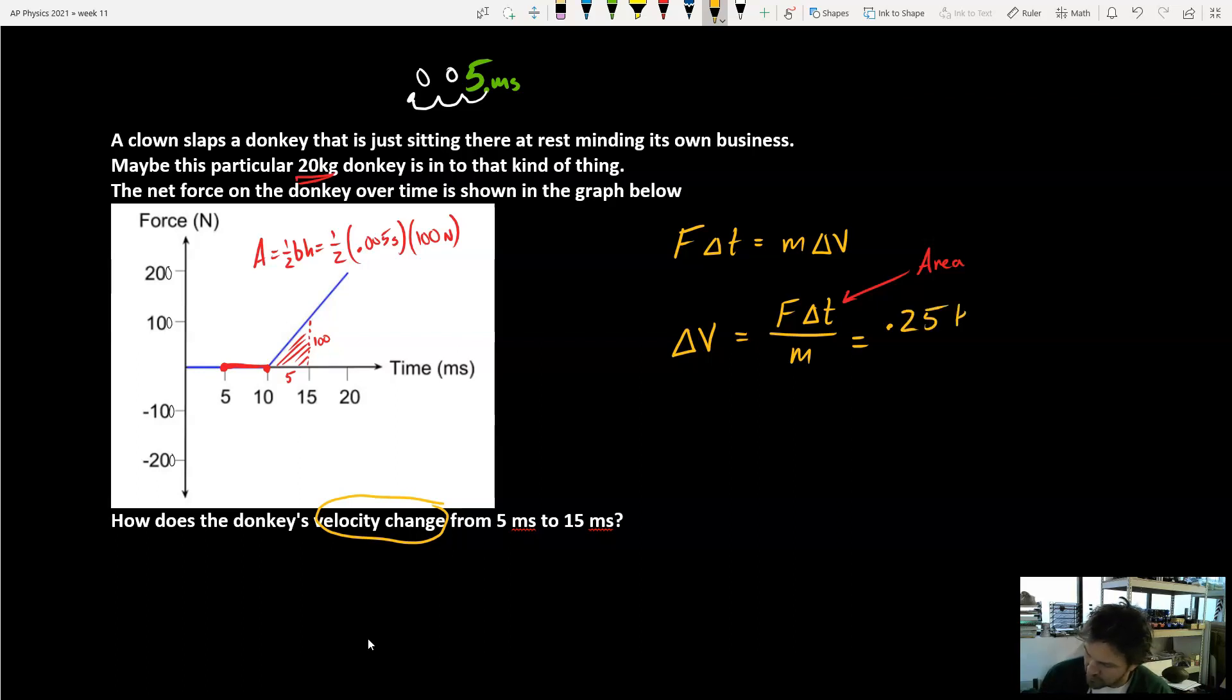I'm going to plug it in over here now of 0.0025. And remember that is kilograms times meters per second. You can see those units on the previous example we did, divided by the mass of 20 kilograms, which gives us a final change in velocity of 0.0125 meters per second. Massive velocity change. That donkey hardly moved. That clown needs to get stronger.